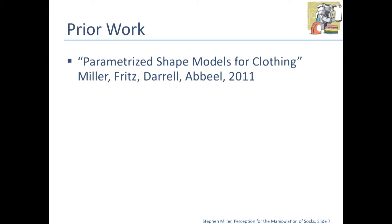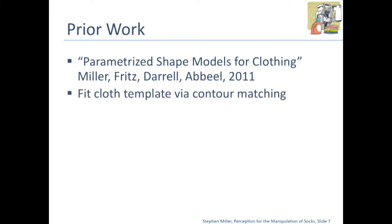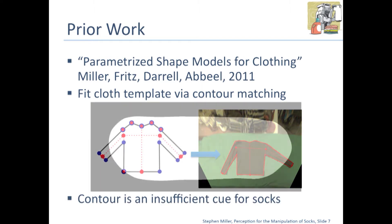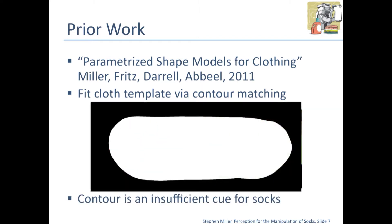Some prior work we've done on parametrized shape models for clothing identified ways of detecting the configuration of other articles of clothing. This used a cloth template to do contour matching. But unfortunately for a sock, the contour alone is insufficient. As you can see from that example, that doesn't tell you where the heel is or where the toe is.